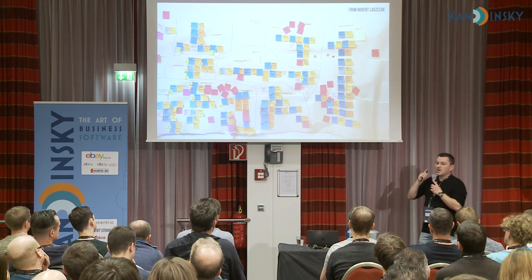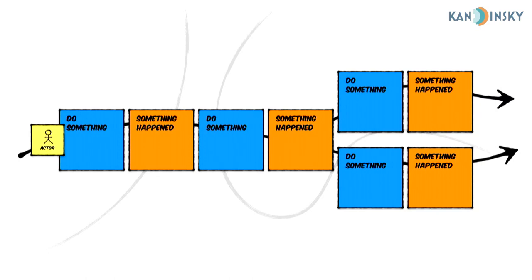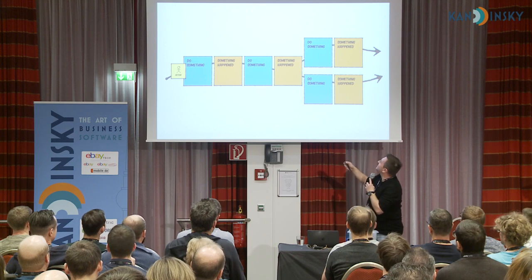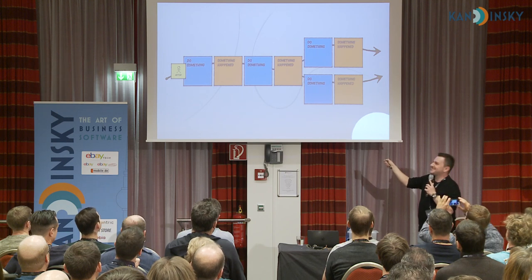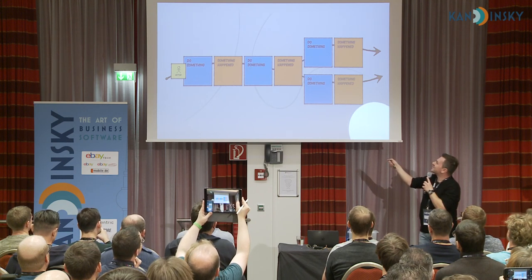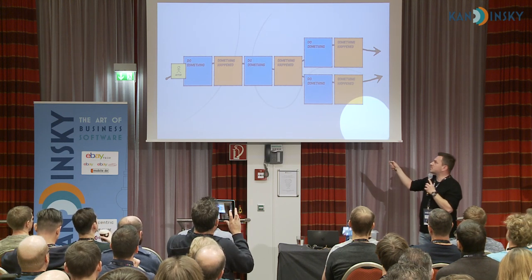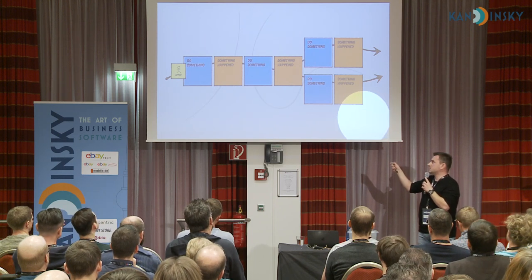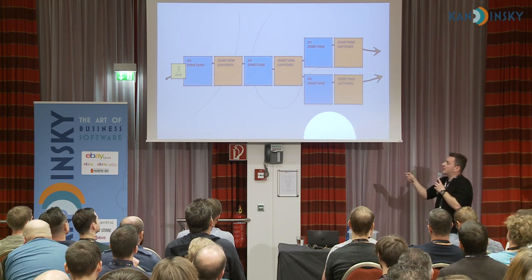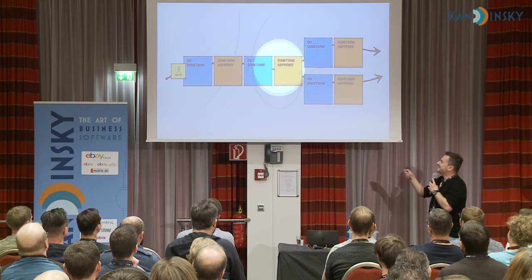One of the interesting things is how this massive amount of sticky notes — commands and events — get split into contexts, services, and systems. If we've got our flow, the question is where are the boundaries? These represent boundaries — maybe a boundary of service, maybe a boundary of system, maybe a boundary of context. And sometimes there are no boundaries at all, which is quite interesting.